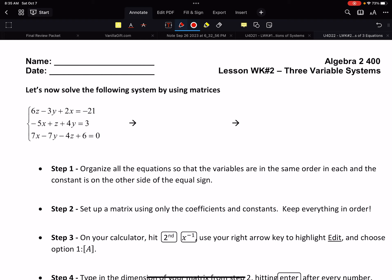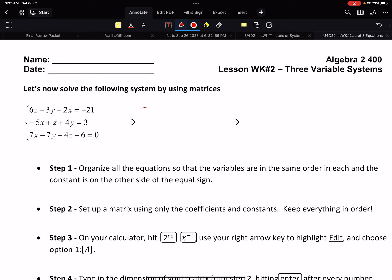We have the ability for our calculator to knock out this entire problem for us. This is called a matrix. As we've already established, the first thing I did was I reorganized: 2x minus 3y plus 6z equals negative 21, negative 5x plus 4y plus z equals 3, 7x minus 7y minus 4z equals negative 6. Now the matrix, which is rows by columns, is all the coefficients, no variables, no equals sign. So my top row would be 2 negative 3 6 negative 21, negative 5 4 1 3 for my middle row, and 7 negative 7 negative 4 negative 6. That is my matrix - it is a 3 by 4 matrix because it has 3 rows and 4 columns.